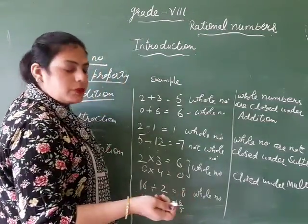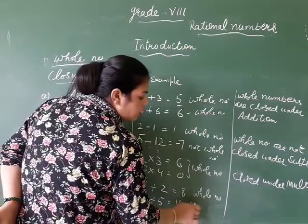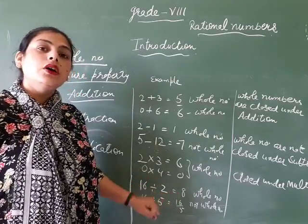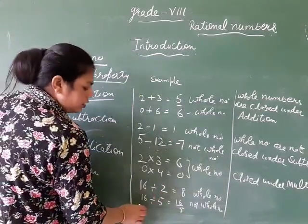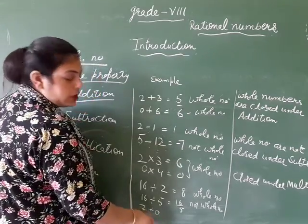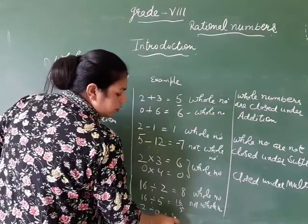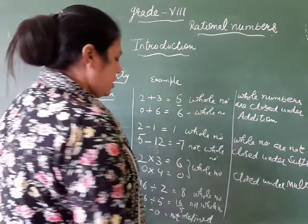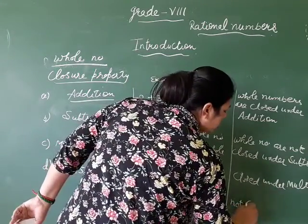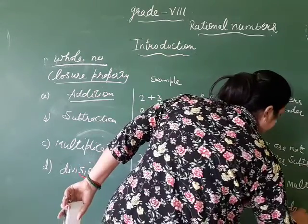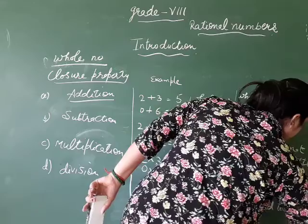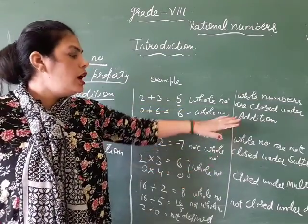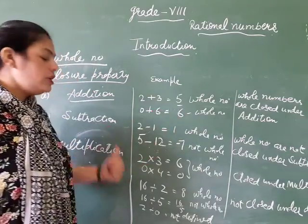Now the next operation is division. If you divide 16 by 2, your answer is 8, which is a whole number. But if we divide 16 by 5, the answer is 3-point-something, which is a fraction and not a whole number. Also, any number divided by zero is undefined, which is not a whole number. So whole numbers are not closed under division. In summary, whole numbers are closed under addition and multiplication, but not closed under subtraction and division.